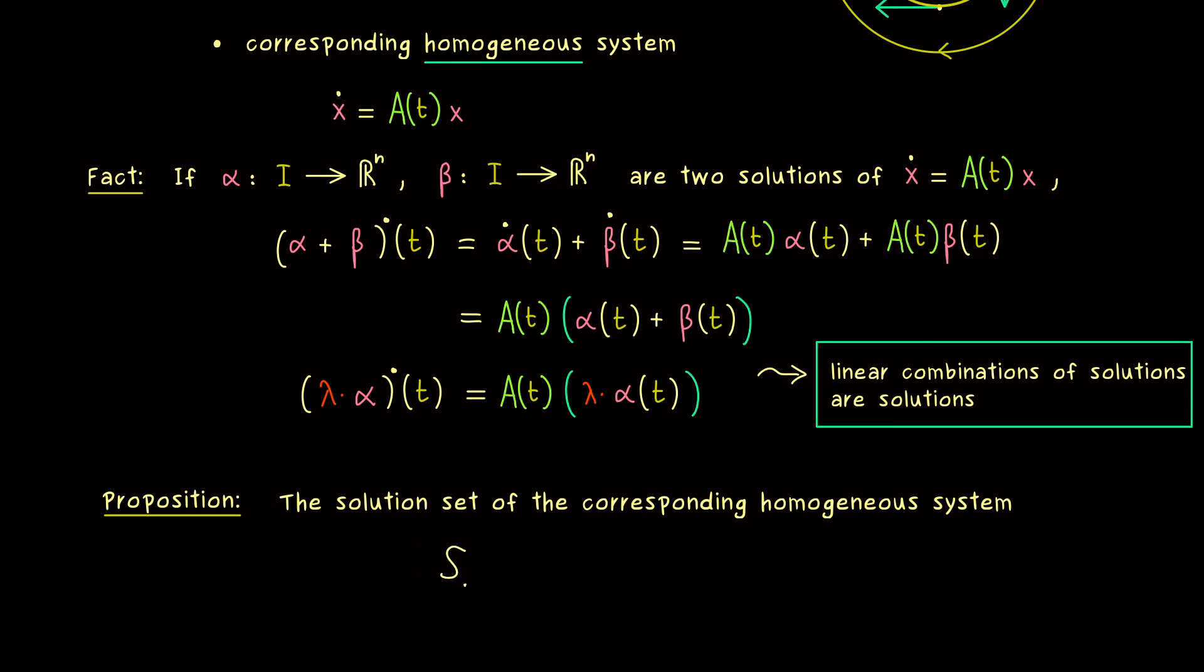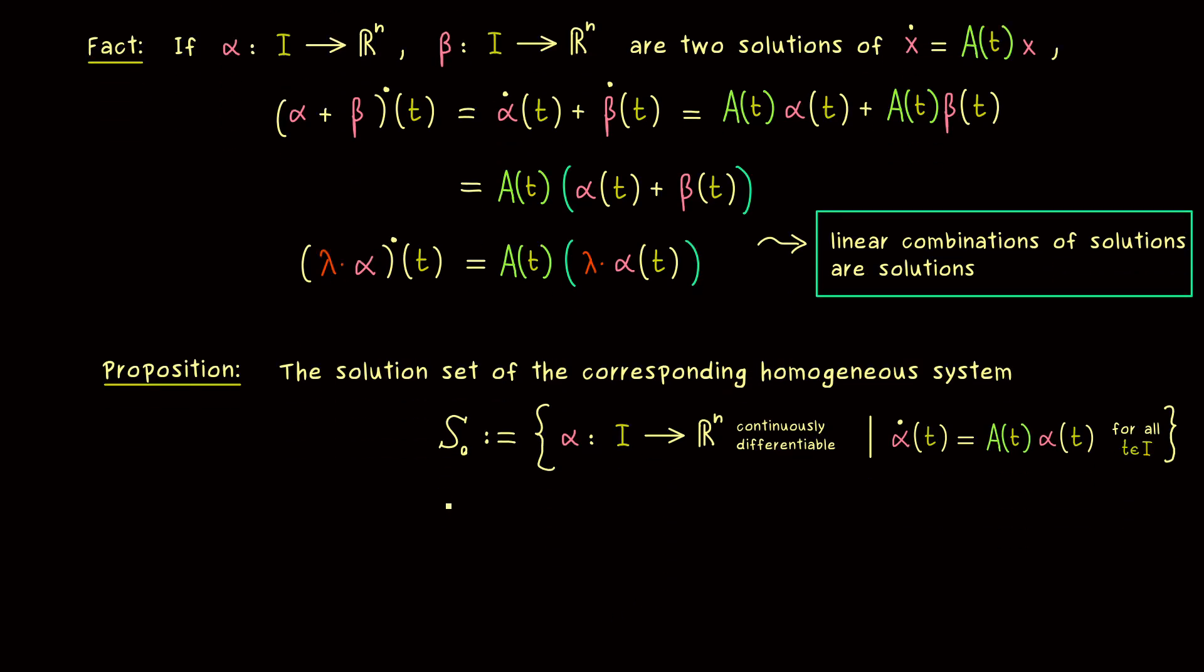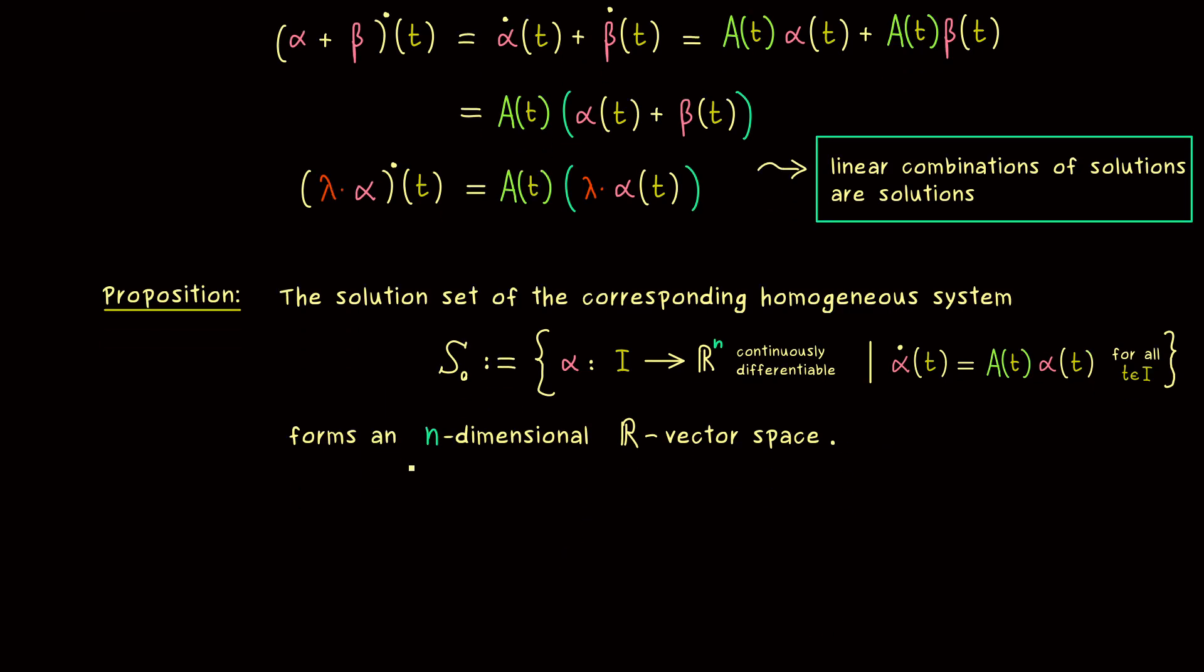And therefore I want to call this solution set here S_0. This means in the set we find all possible functions alpha defined on the interval I that are continuously differentiable and that satisfy that the derivative is equal to A times alpha. And obviously we want to fulfill this equation for all t in I. So all possible solutions of our ODE here are found in this set S_0. And now what we get for the homogeneous system is that this is an n-dimensional vector space. More precisely, it's a real vector space, so the scalars are given by the real numbers.